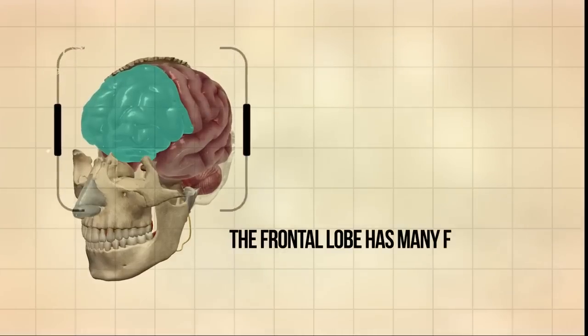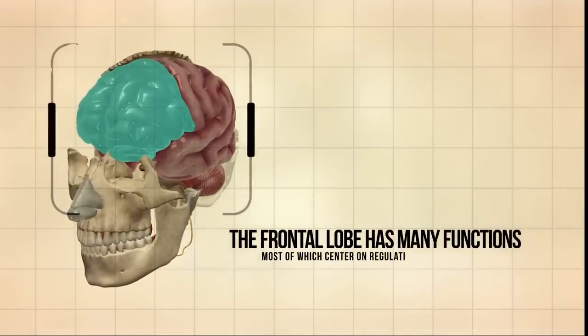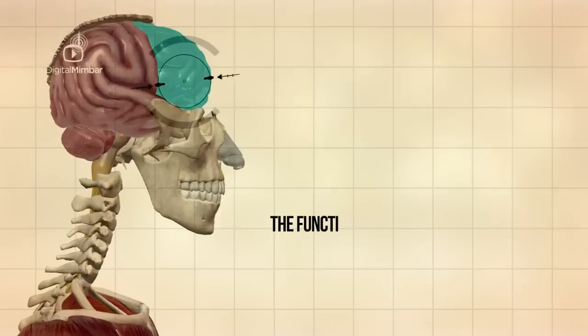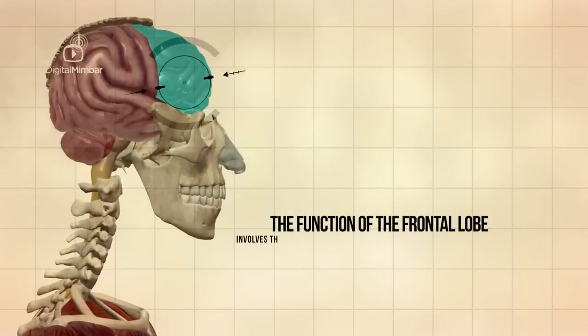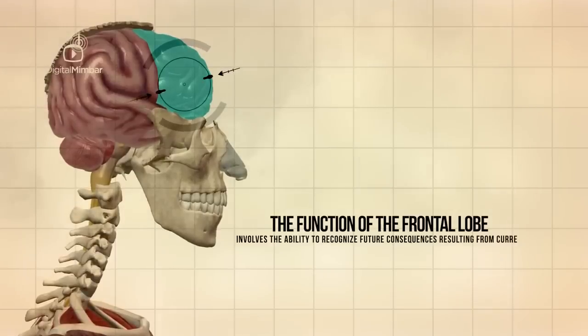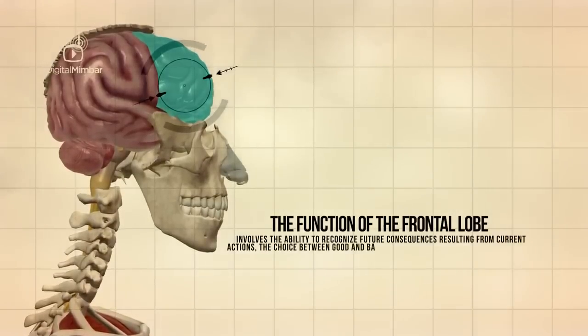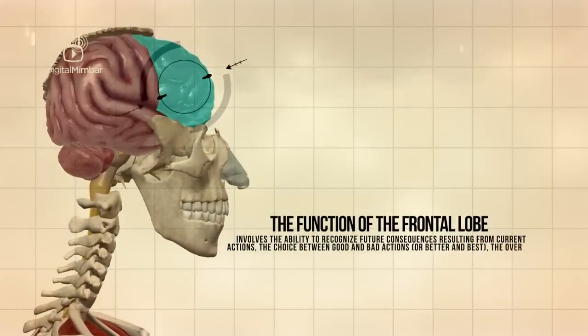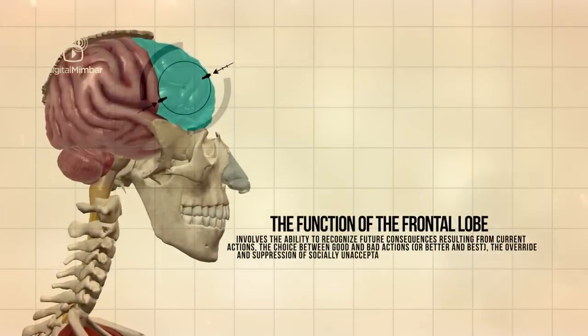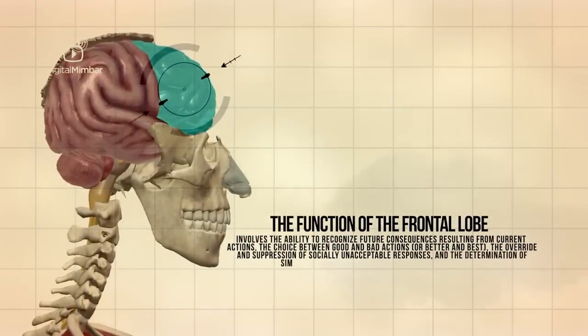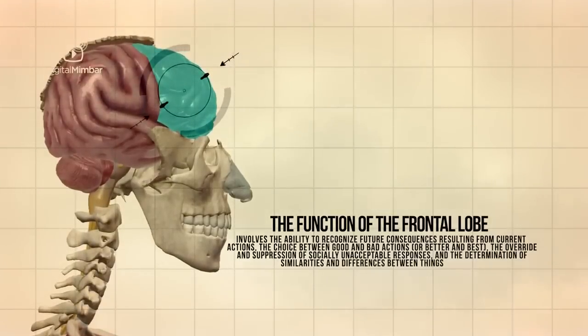The frontal lobe has many functions, most of which center on regulating social behavior. The function of the frontal lobe involves the ability to recognize future consequences resulting from current actions, the choice between good and bad actions or better and best, the override and suppression of socially unacceptable responses, and the determination of similarities and differences between things or events.